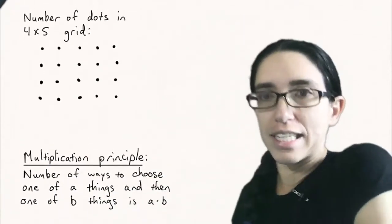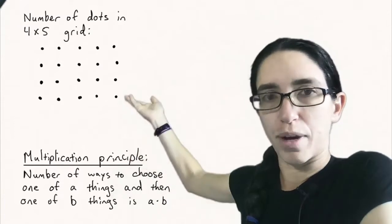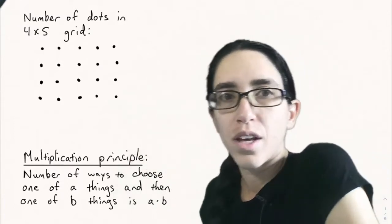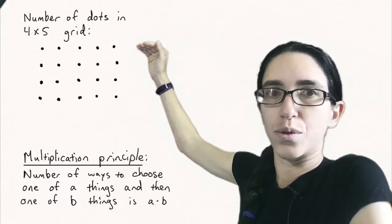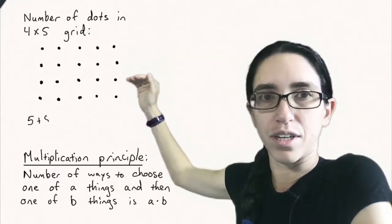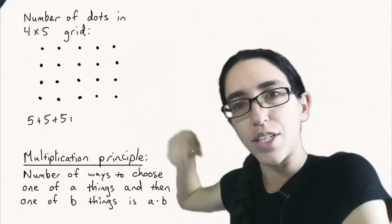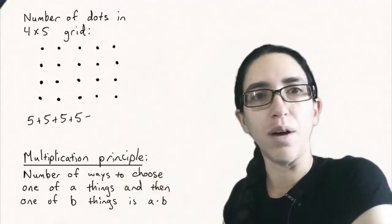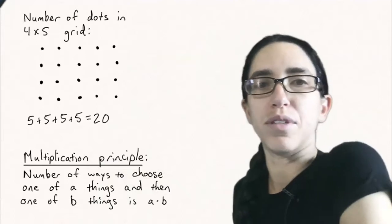Let's consider another example. How many dots are in this four by five grid of dots? Well one way we could do it is count them by row. So there are five dots in the first row, five dots in the second row, five dots in the third, five dots in the fourth. And so by the addition principle we can add them all up and say five plus five plus five plus five is 20.